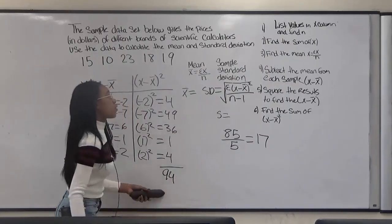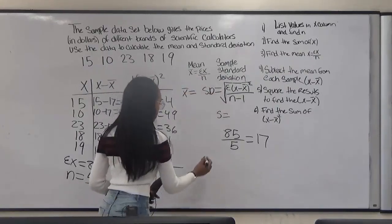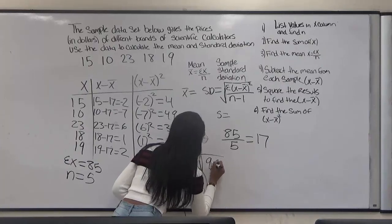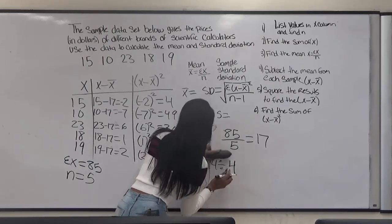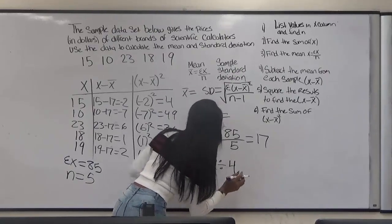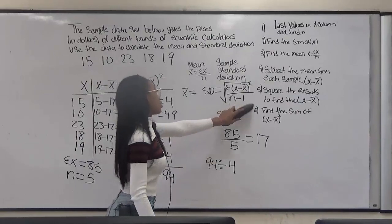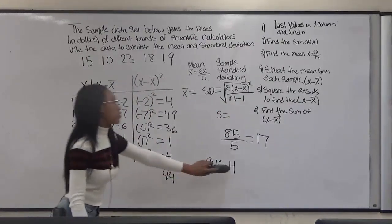We get 94. We're going to take the 94 and enter it into our sample standard deviation formula. So we would basically have 94 divided by 4. We're doing 94 divided by 4 because of n minus 1. Our n here is 5. So we're going to do 5 minus 1 which gives us 4.